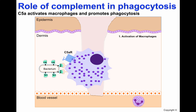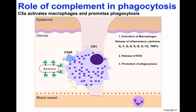Once activated, macrophages will increase their expression of CR1, which is important in recognizing C3b. They will also release pro-inflammatory cytokines such as IL-1, IL-6, IL-8 (also known as CXCL8), IL-12, and TNF-alpha. These cytokines increase vascular permeability to allow components of the complement system and neutrophils to gain access to the site of infection. Activated macrophages will also release reactive oxygen species, which cause damage to the pathogen. Finally, activated macrophages can phagocytose pathogens. Without C5a, all of these actions will occur but at a reduced rate.